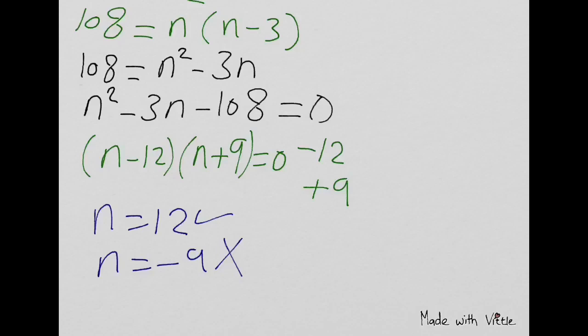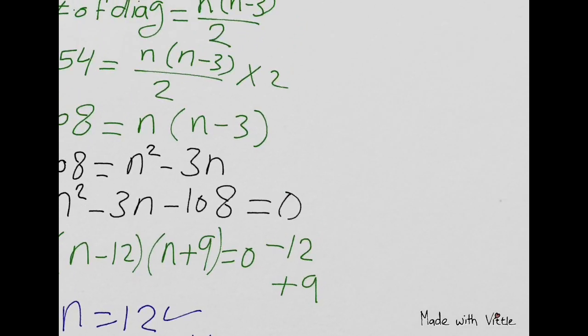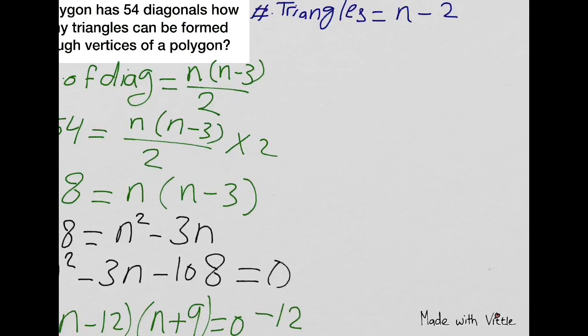Now I can find the number of triangles that can be formed by using this formula. Number of triangles equals n minus 2. So the number of triangles is 12 minus 2 equals 10. The number of triangles that can be formed through vertices of a polygon is 10.